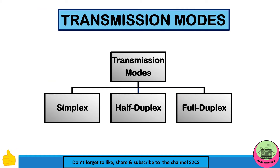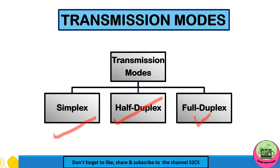There are three types of transmission modes: simplex, half-duplex, and full-duplex. Now we will see each of these modes in detail.